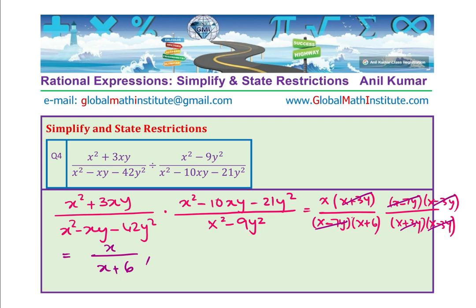The restrictions are: since it was division, we look at factors of all expressions. From the denominators and the flipped numerator we get: x is not equal to 7y (from x minus 7y), x is not equal to minus 6y (from x plus 6y), x is not equal to 3y (from x minus 3y), and x is not equal to minus 3y (from x plus 3y). So we have four restrictions in this case. When you have 42y squared in the expression, factors include (x minus 7y) and (x plus 6y).